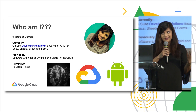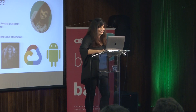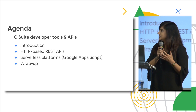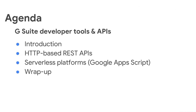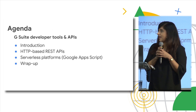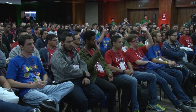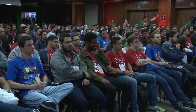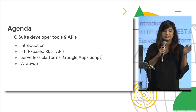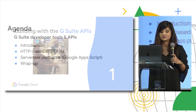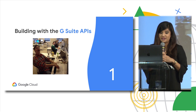Let's quickly go over the agenda and actually get started. First we're going to introduce G Suite and these APIs, then we'll go through some REST APIs — today I'll be showing some Python code — and then we will talk about Google Apps Script. It looks pretty close to JavaScript so don't worry, it's going to go fine. Then we'll wrap up.